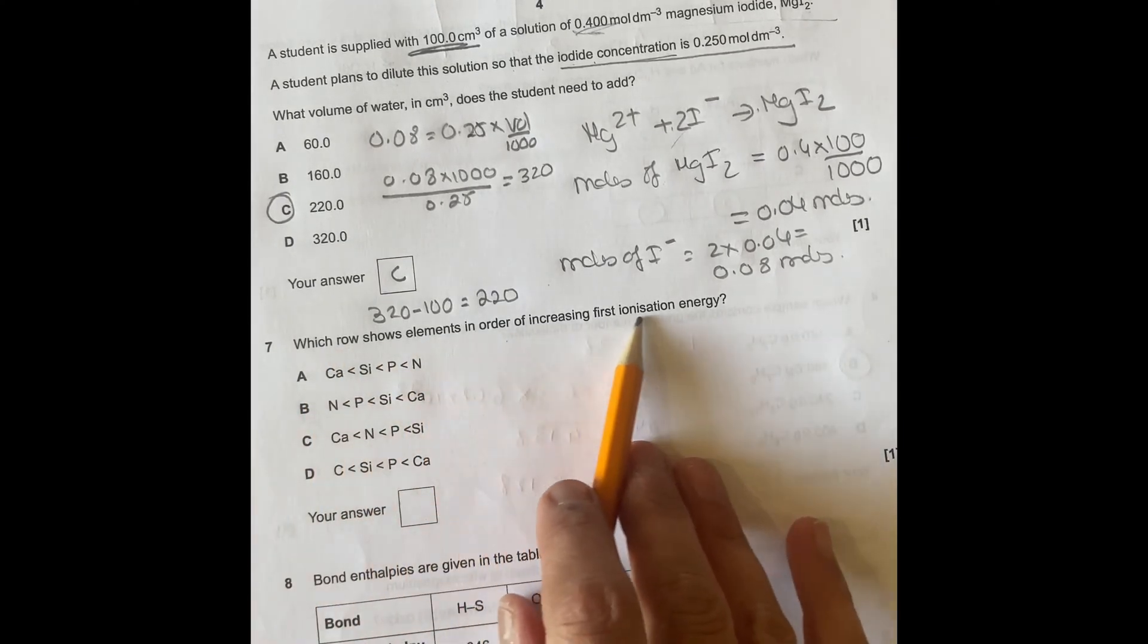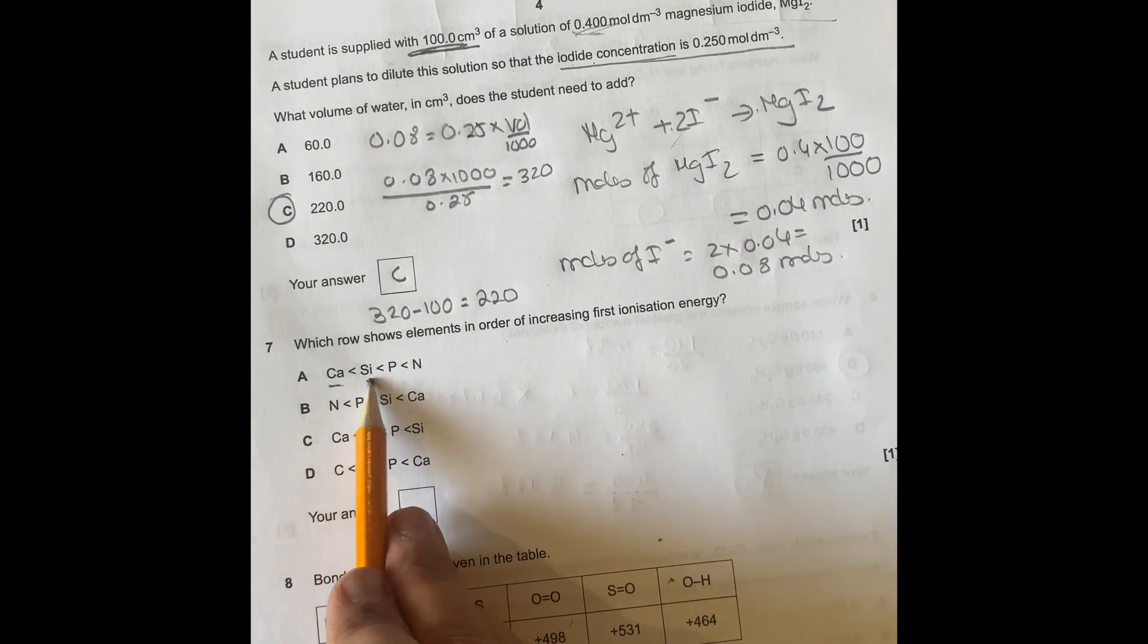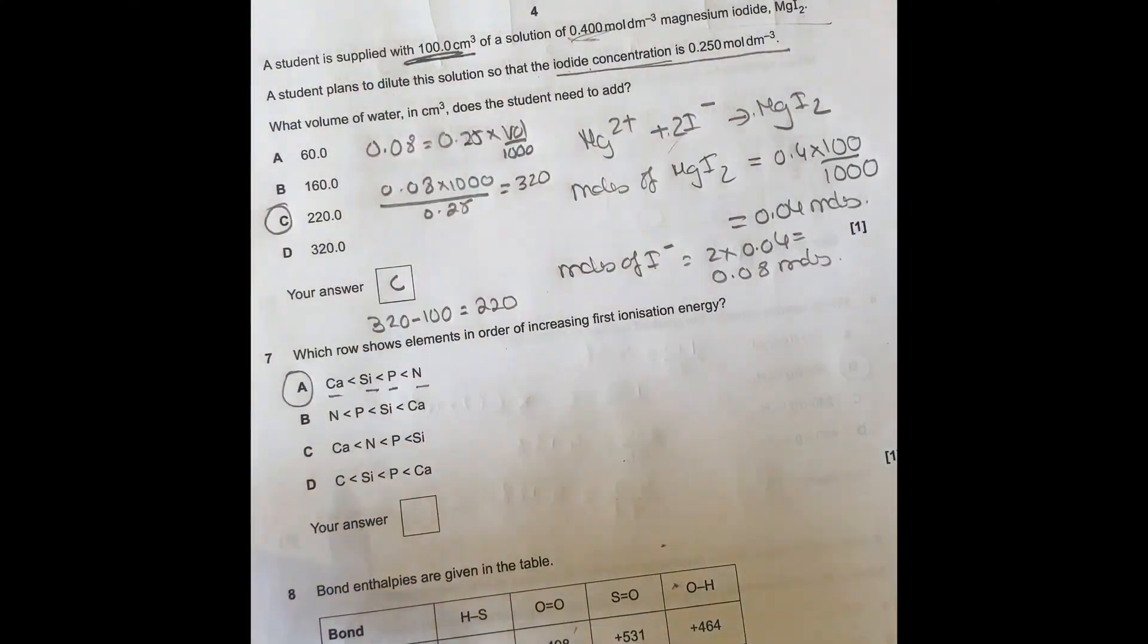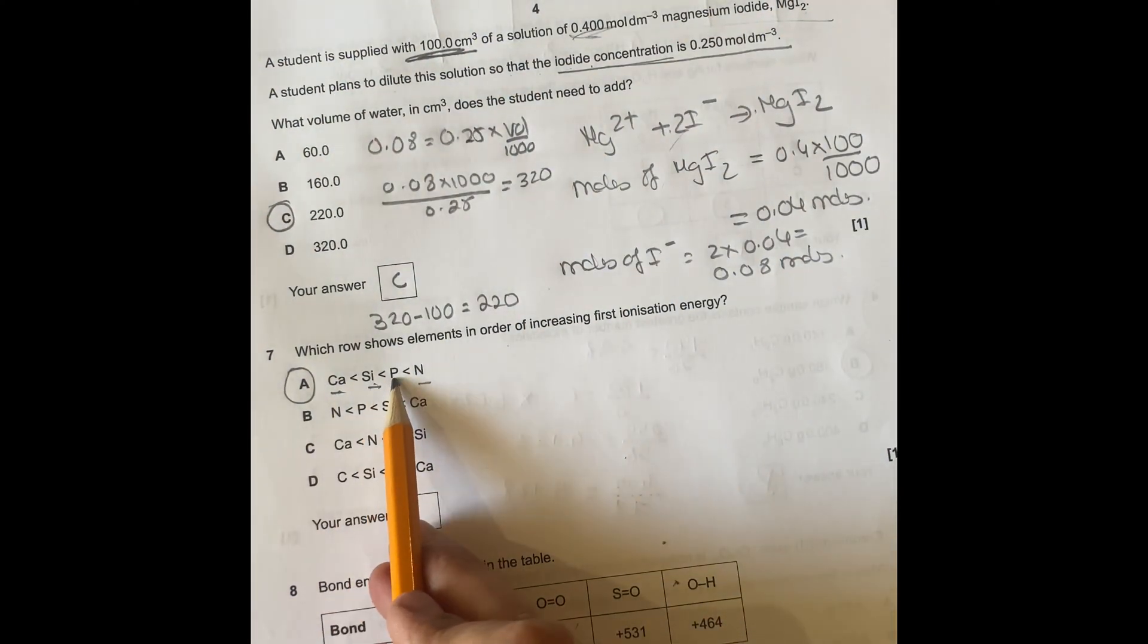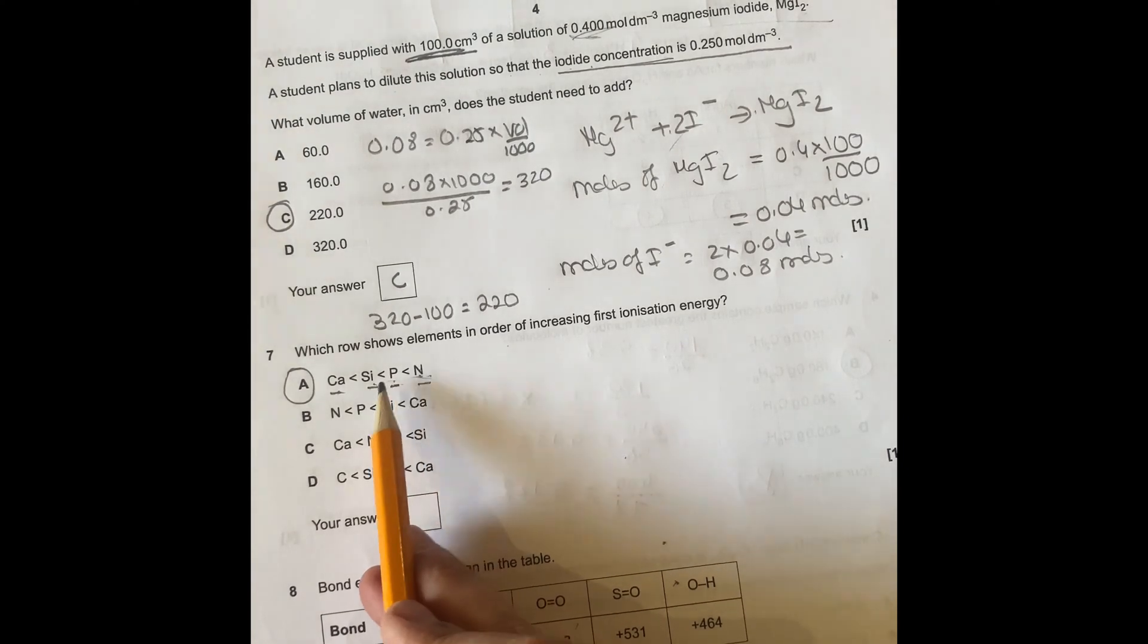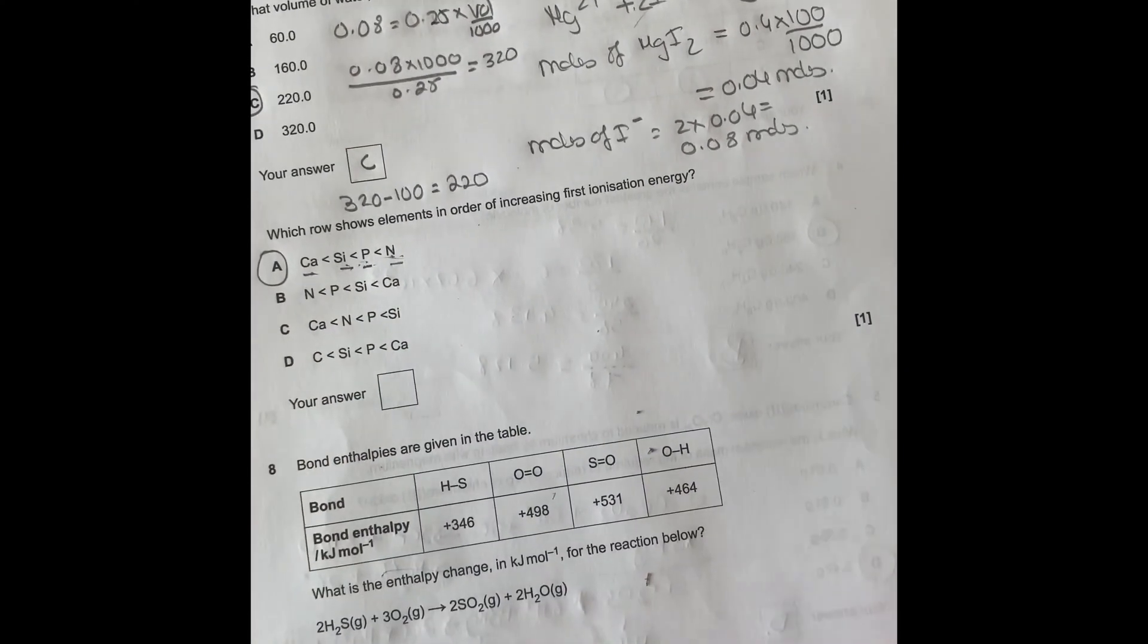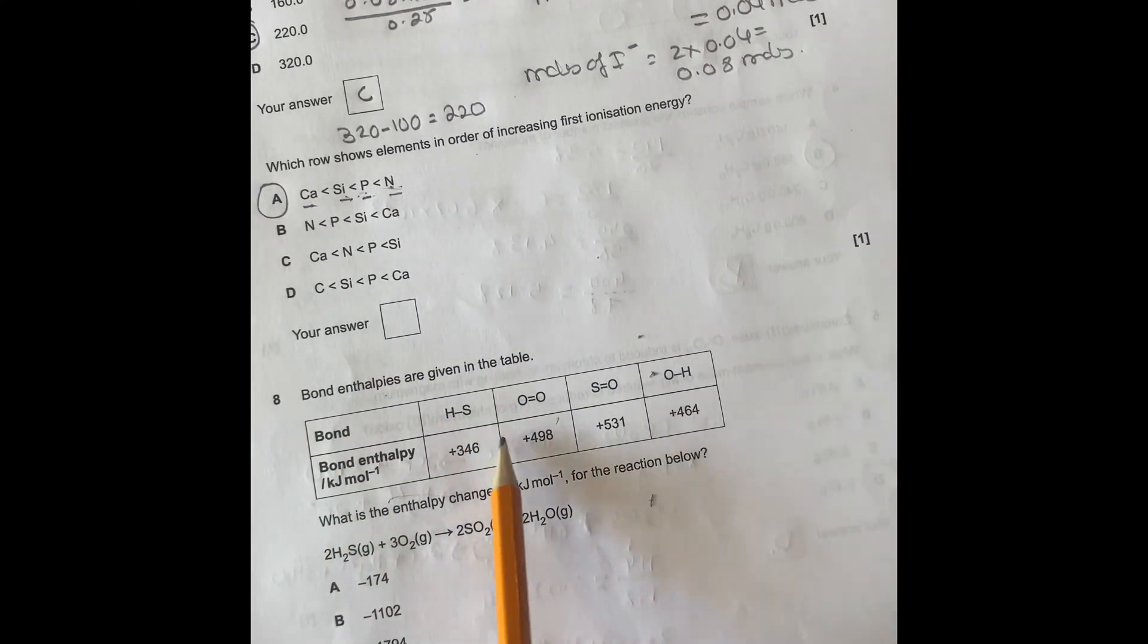This one, which row shows elements in order of increasing first ionization energy? So you've got calcium, silicon, phosphorus, and nitrogen. That's A. So you just work out through group two, group four, group five, and those two are in different periods. So that one is period three, and I think period four, period two or period four. I have to check, but that is the answer to that.